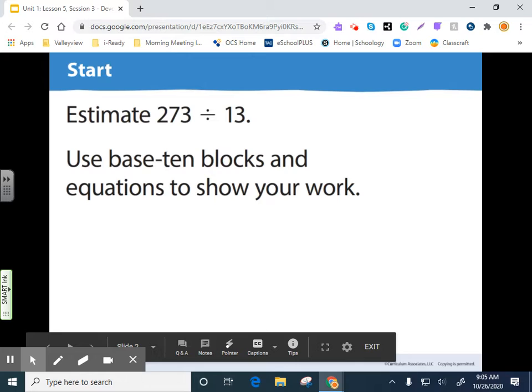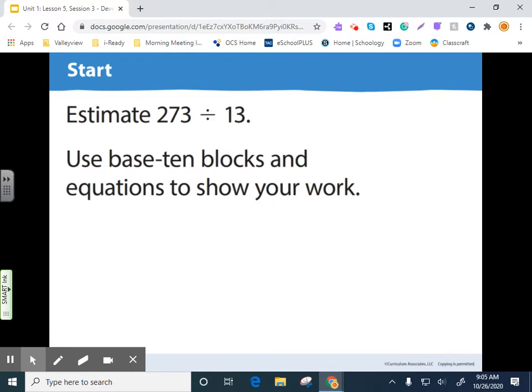The warm-up here is estimate 273 divided by 13. Let's just go ahead and try to solve this instead. Again, at this point, estimation is helpful, but we just want to do it like this. So the best way to set up a problem when it's like this is to read it from left to right. So it's 273 divided by 13. So that means this first number is going to go in what we call the house, and then that's divided by the number 13. So our dividend is 273, our divisor is 13.